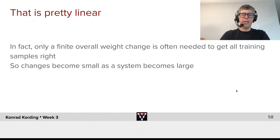That actually looked pretty linear, and it looked like the change is very small. In fact, only a finite overall weight change is often needed to get all training samples right. In many cases, as the network gets very large, that change becomes arbitrarily small.